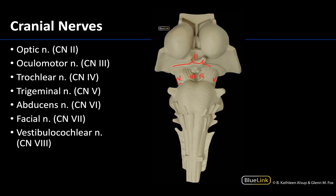Four cranial nerves originate from the pons: cranial nerves 5, 6, 7, and 8. Six through eight will be more closely associated with the inferior portions of the pons, very close to the medulla oblongata, whereas the trigeminal is your largest cranial nerve with a fairly distinctive large trunk on the lateral sides of the pons. The abducens will be more medially located, while the facial and vestibulocochlear are closely associated — facial is the smaller one and vestibulocochlear or cranial nerve 8 is the larger.